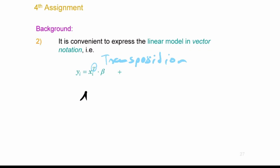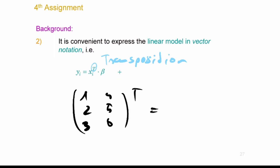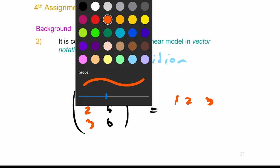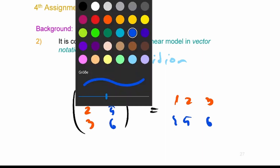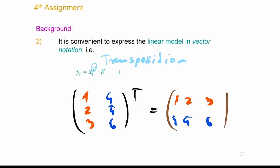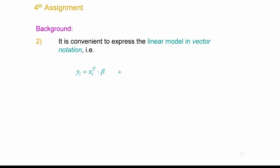If you have a matrix — say entries 1, 2, 3, 4, 5, 6 — and you transpose it, you put the entries of the first column (1, 2, 3) into the first row of the transpose, and then you have 4, 5, 6. So xi is a column vector, and xi-transpose is a row vector. This is a vector of parameters called beta.